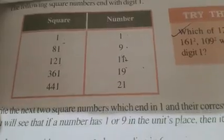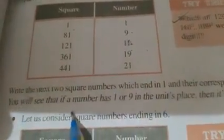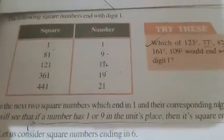What does the property tell us? If a number has 1 or 9 in unit place, then its square ends in 1. The square ends in 1. And write the examples. Got this?